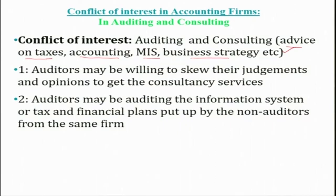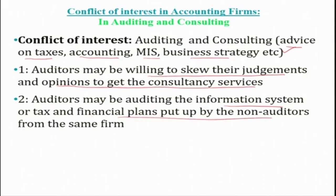These multiple services enjoy economies of scale and scope — a potential synergy. However, this creates two potential sources of conflict of interest. The most commonly discussed conflict is the potential to pressure auditors to bias their judgments and opinions to limit any loss of fees in other services — auditors may be willing to skew their judgments to get consultancy services. The second, more subtle conflict is that auditors often evaluate systems, tax structures, or financial structures that were put in place by their non-audit counterparts within the same firm — clearly a conflict of interest. Both conflicts may lead to biased audits.